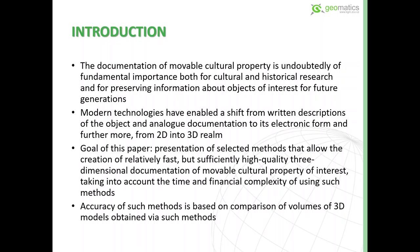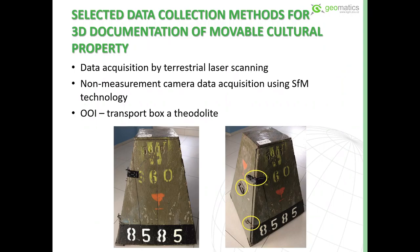The goal of this paper is the presentation of two methods allowing the creation of relatively fast and sufficiently high-quality 3D documentation of movable cultural properties, taking into account not only time but also the financial complexity of such methods. We compare them based on volumes of the 3D models suitable for documentation obtained through these methods.